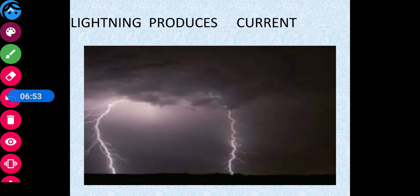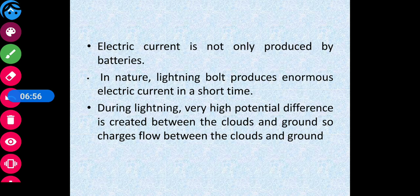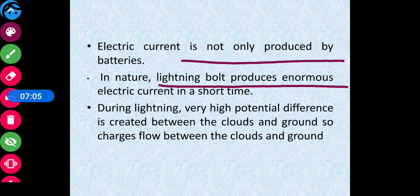Lightning also produces electric current. In nature, a lightning bolt produces an enormous current in a short time. During lightning, a very high potential difference is created between the clouds and the ground, causing charges to flow between them.